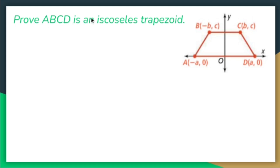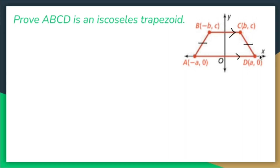Prove ABCD is an isosceles trapezoid. In order for something to be an isosceles trapezoid, you need to show two things: that two sides are parallel, and that two sides are congruent.